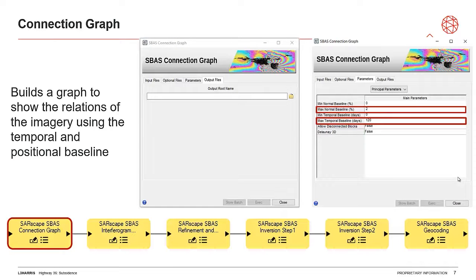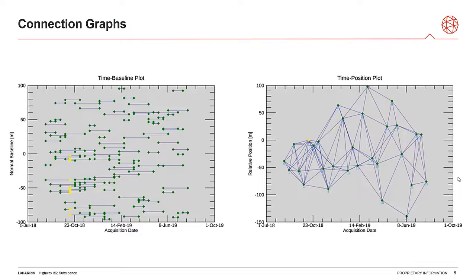After all our images have been collected, we can go into the processing itself. The first step is what is called a connection graph. What this is, is it's showing the relations between images on a temporal and positional baseline. We need our images to be similar enough that they can actually be compared to each other, and so that's what this is testing — it's essentially saying whether we can do our processing or not. Every single green point is an image, and every single line between them represents the other images that it is similar enough to be connected to. A good connection graph should have five different connections for each point, and every single one of those lines is going to be created into an interferogram, which is where most of the processing comes into play.